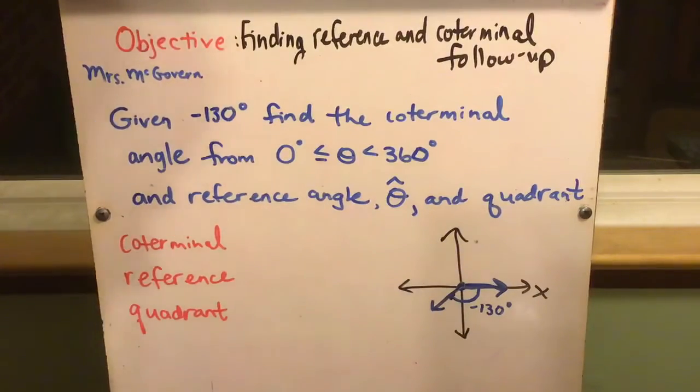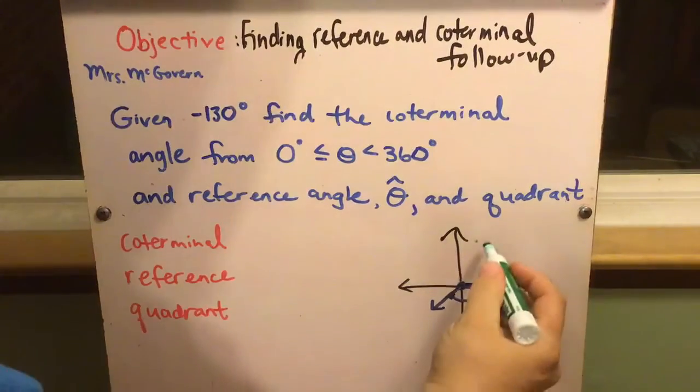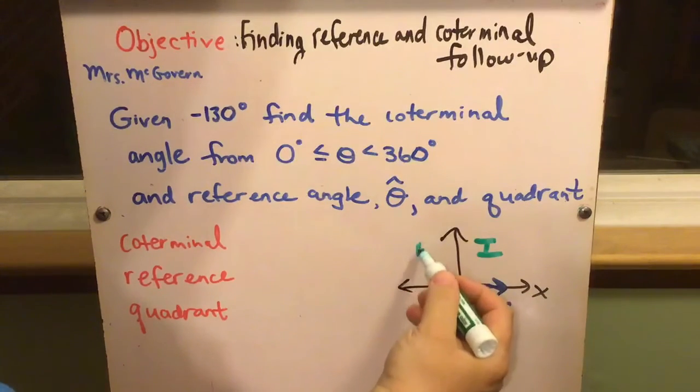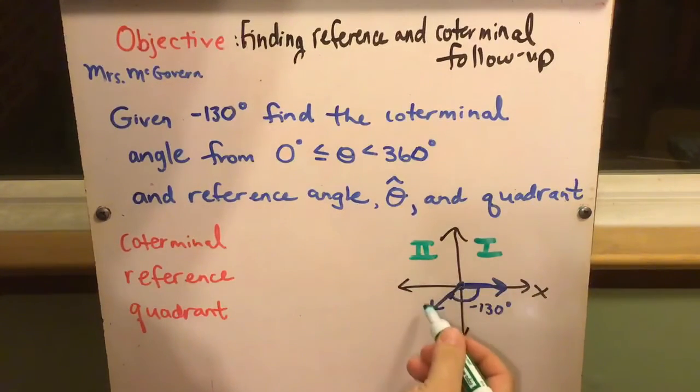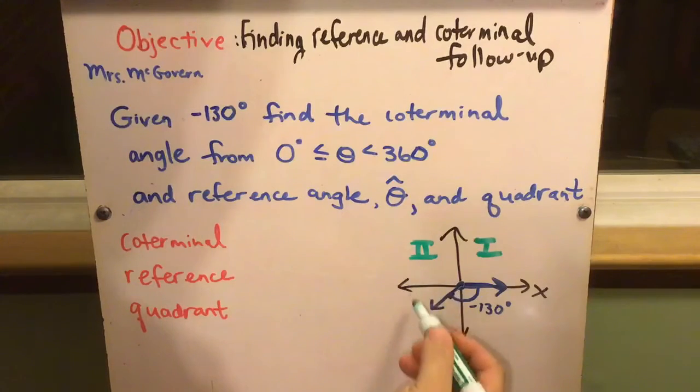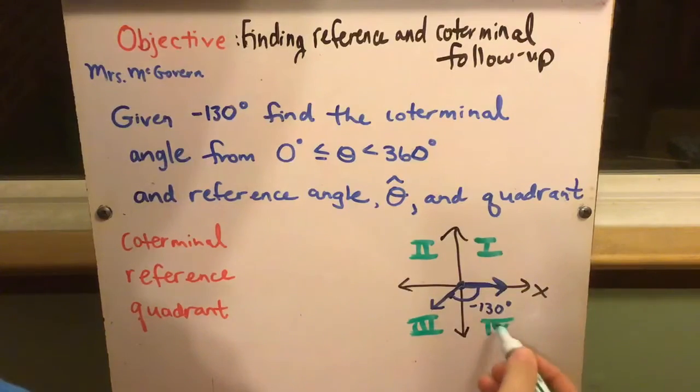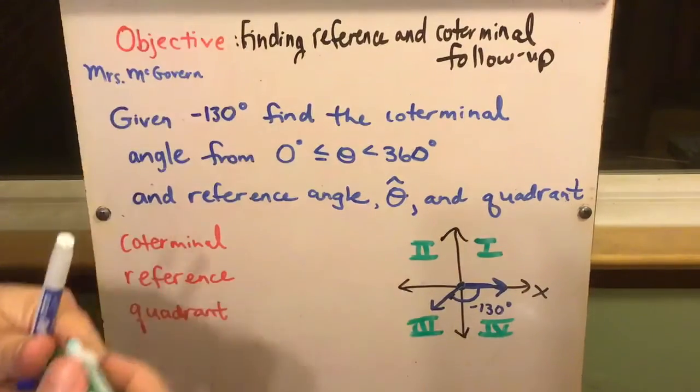You already know what quadrant it's in because of your quadrants. When they're both positive, when x is negative and y is positive, down here x is negative and y is negative, and over here x is positive in quadrant 4 but y is negative.